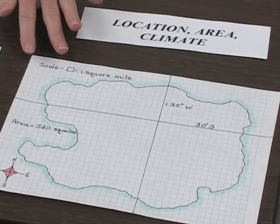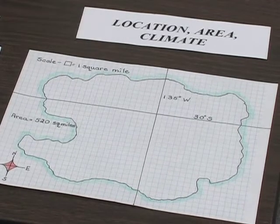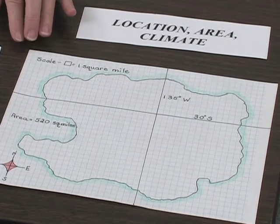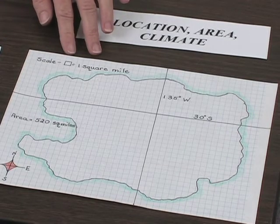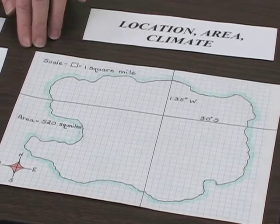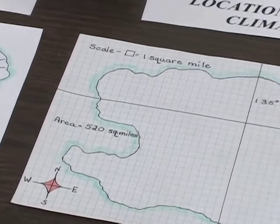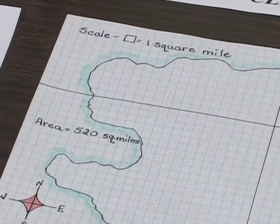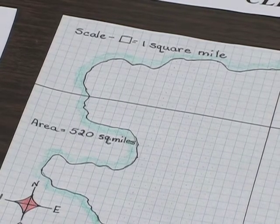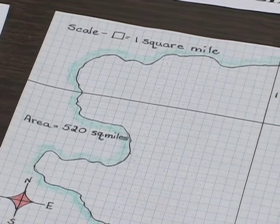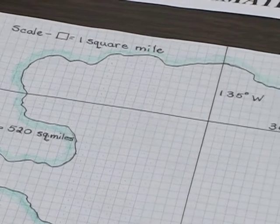The next step is to determine the location, area, and climate of their island. For this, they trace their same island again, only this time on graph paper, and they decide what their scale is going to be. On mine, one square equals one square mile. Then they start counting all the whole squares to determine area — putting little dots so they don't lose track — and then estimate how the partial squares add up. It doesn't have to be exact.